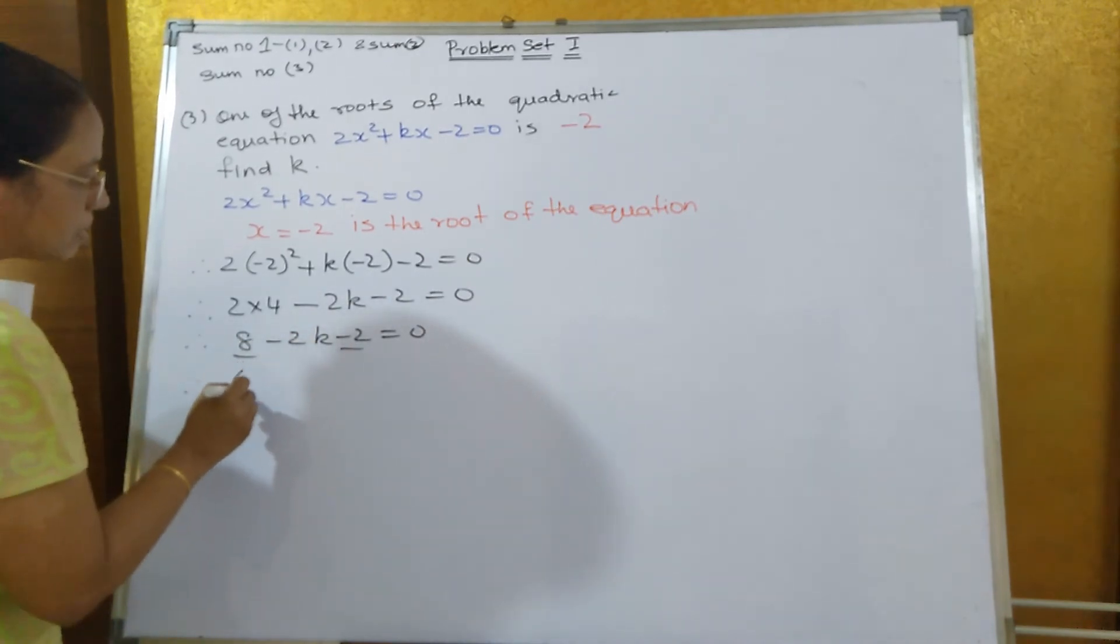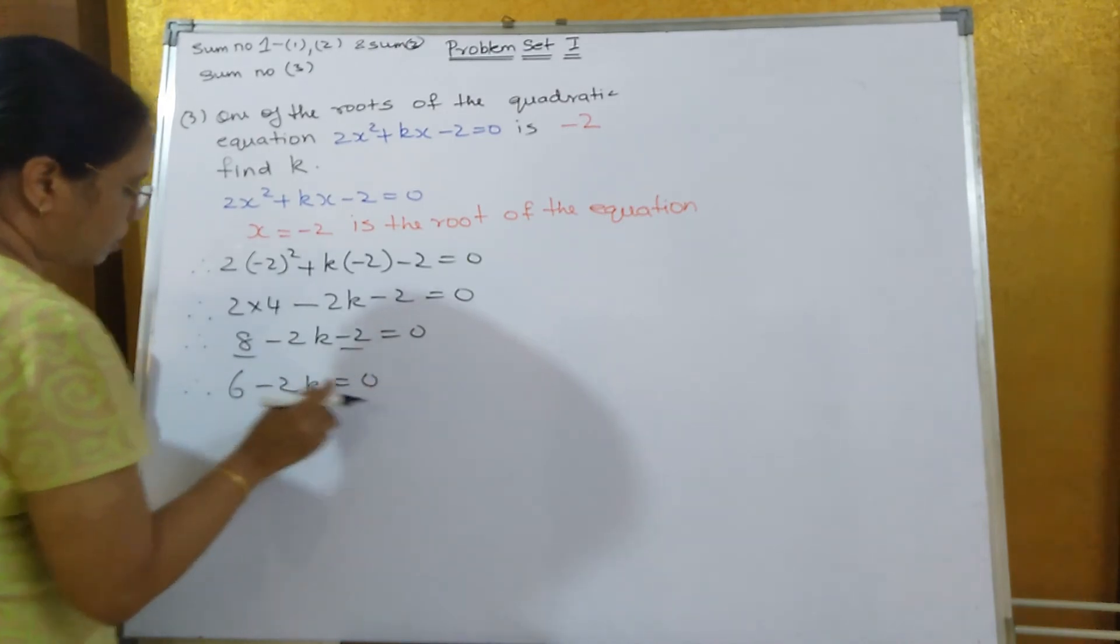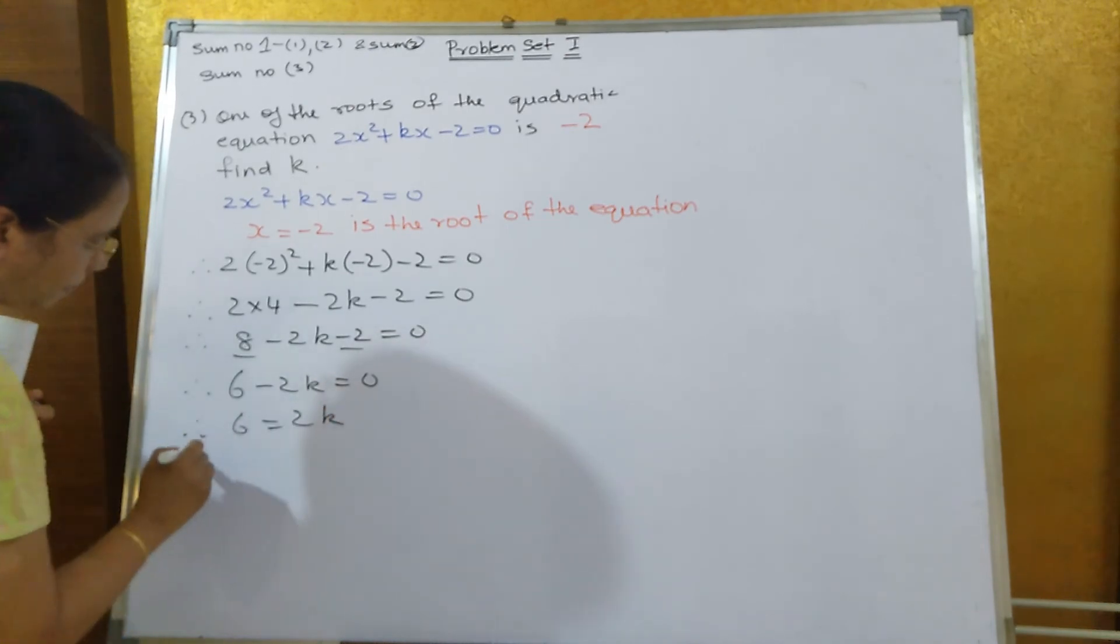Therefore, 6 minus 2k equals 0. Take the minus 2k on the other side, you will get 6 equals 2k. That is, 2k equals 6.